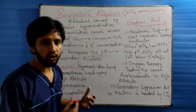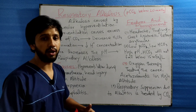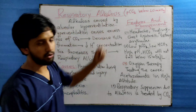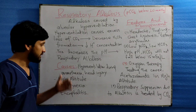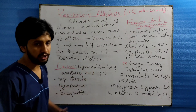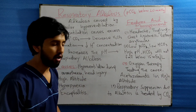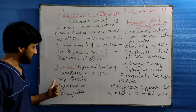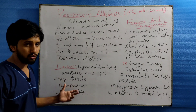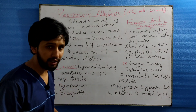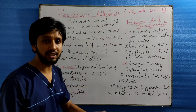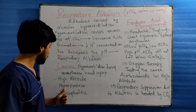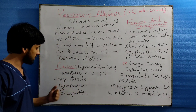Moving to the causes of respiratory alkalosis — what are the different causes? Number one is hyperventilation during anesthesia or during head injury. Likewise, at high altitudes there is increased hyperventilation, that is an increased respiration rate. This is a major cause.